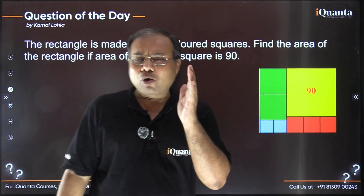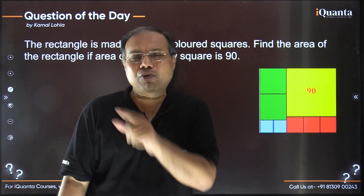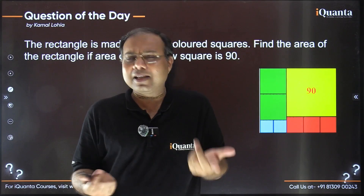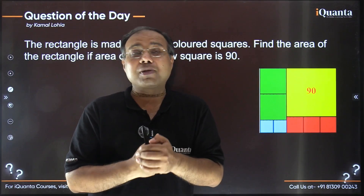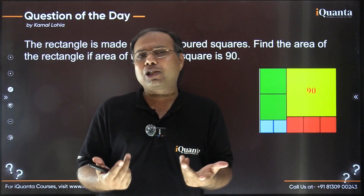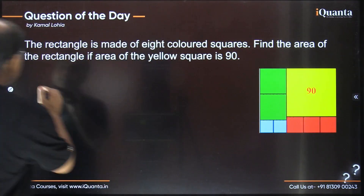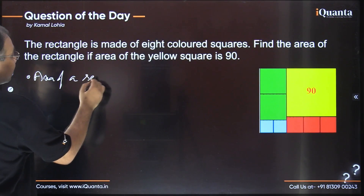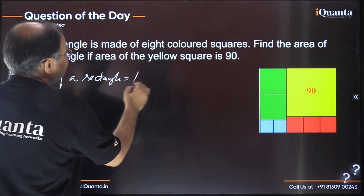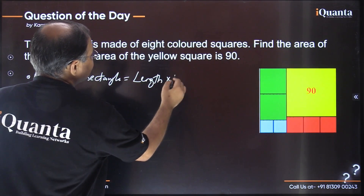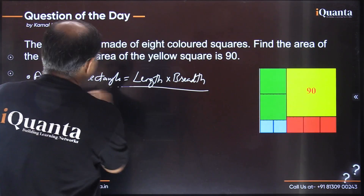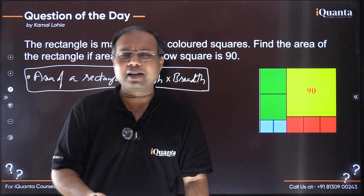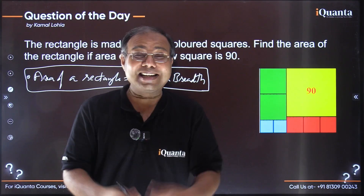The area of a square is side × side, and similarly the area of a rectangle is length × breadth. In case of a square, both length and breadth are equal; in a rectangle that is not compulsory. That is the only prerequisite — area of a rectangle is length multiplied by breadth.